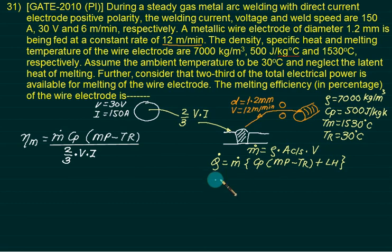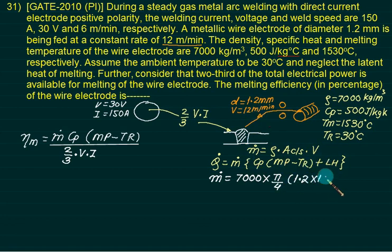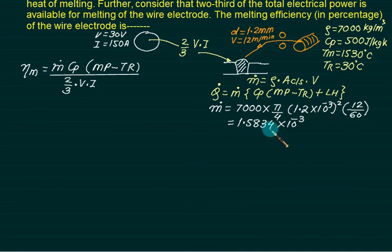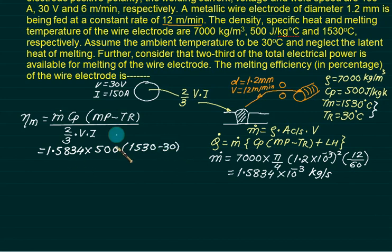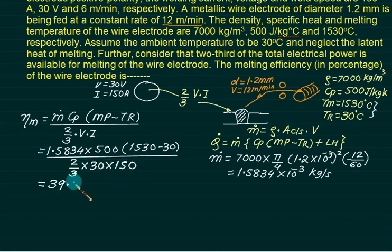Melting efficiency = [M-dot × Cp × (Tm − T_room)] divided by (2/3 × V × I). Now calculate M-dot: density is 7000, cross-sectional area is π/4 × (1.2 × 10⁻³)² m², velocity is 12/60 m/s. Mass flow rate comes out to be 1.538 × 10⁻³ kg/s. Put this back: numerator is 1.538 × 10⁻³ × 500 × (1530 − 30), denominator is 2/3 × 30 × 150. Answer is 39.6%.